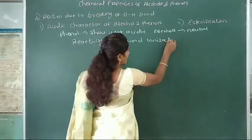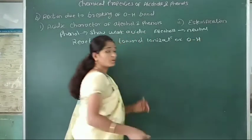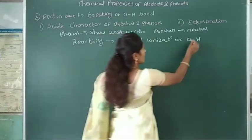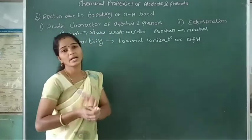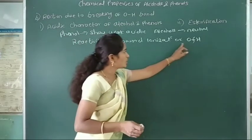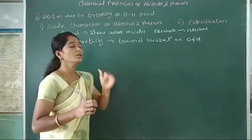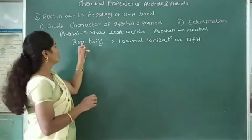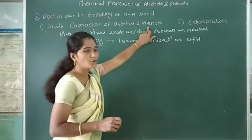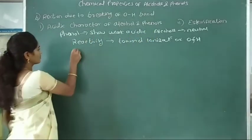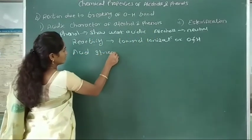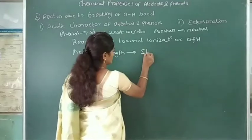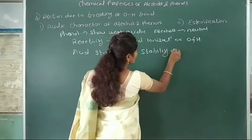Ionization means the formation of cation and anion after breaking of the oxygen-hydrogen bond. This ionization of the oxygen-hydrogen bond is difficult in alcohol and phenol. The acid strength of alcohols and phenols depends upon the stability of the conjugate base.